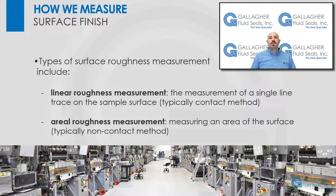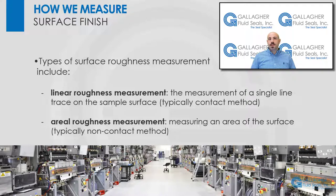Two types of surface roughness measurement include linear and aerial. Linear is a measurement of a single line profile trace, typically through contact methods. Aerial is measuring the area of a sample surface, typically through non-contact methods.